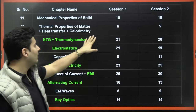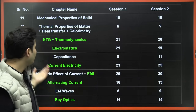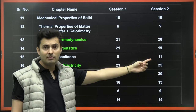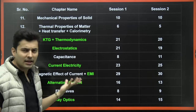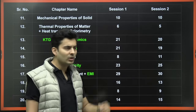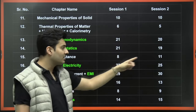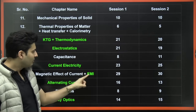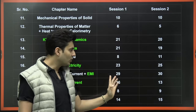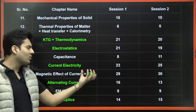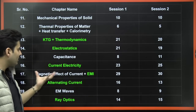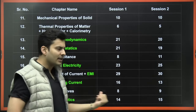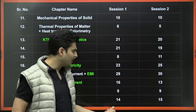Thermal properties of matter, heat transfer, and calorimetry have very low weightage — only 5 to 6 questions. KTG and thermodynamics are very important, as you can see. Electrostatics is again very important. Capacitance is not so important — 8 to 11 questions only. Current electricity has very high weightage — 23 to 25 questions. Magnetic effects of current, EMI, and alternating current together yield around 29 to 30 questions, with the majority from EMI. Electromagnetic waves — at most one question.